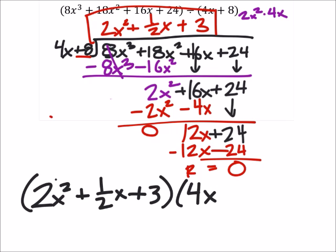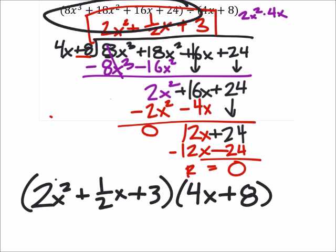Now, what you're going to need to do is multiply this by the divisor, which was 4x plus 8, and you should get our dividend.